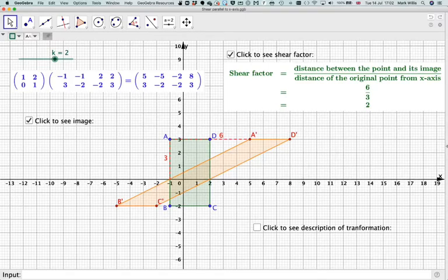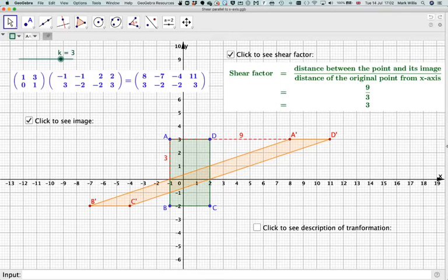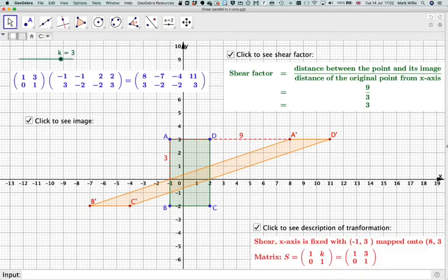Now in order to describe a shear, you must first of all say that it is a shear. And then you must say what happens to one of the points. So I'm saying the point minus 1, 3, for example, has been moved to the point 8, 3. And then we also have to say which axis is fixed. In this case, the x-axis is fixed. I'll do another video where the y-axis is fixed.